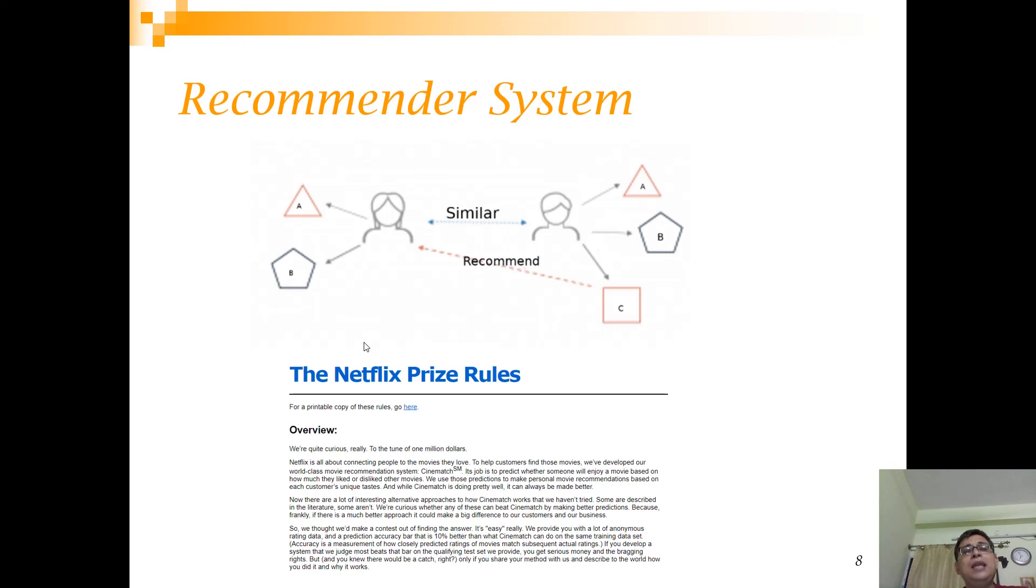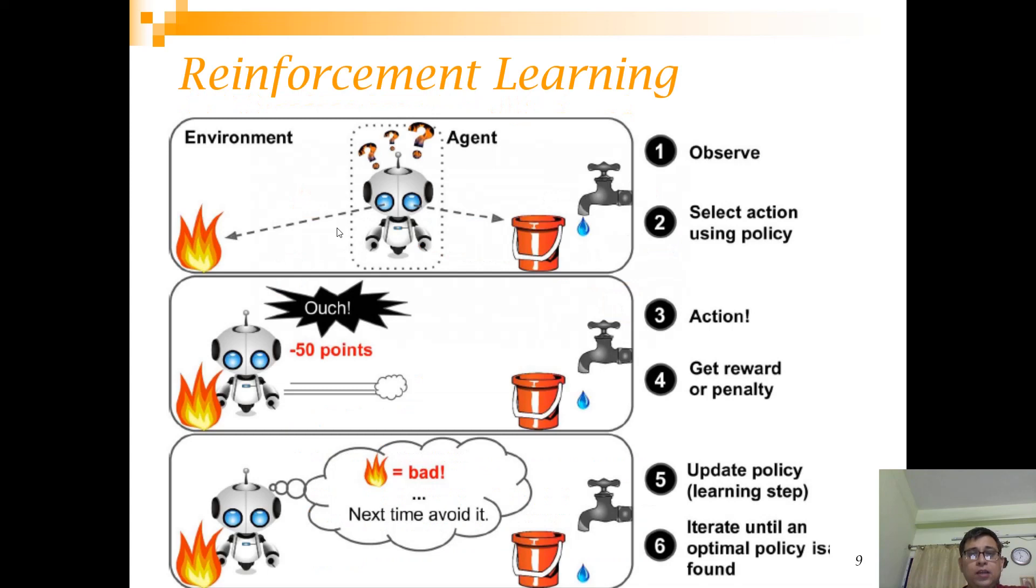Another important area is called recommender system. This is one of the very upcoming fields of machine learning. The idea is that if there are two users and they're similar, and if this person has already seen movies ABC or purchased product ABC, and this user has purchased A and B, then recommend C to this user. Because these two users' tastes match. It would be unfair if I don't talk about the Netflix prize here. This Netflix prize is what makes recommendation systems very hot. It was back in 2006, where they launched a competition with $1 million of prize money. I would definitely recommend that you read up more about this competition.